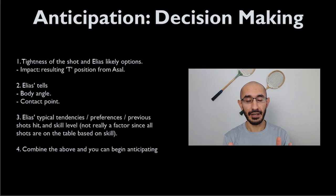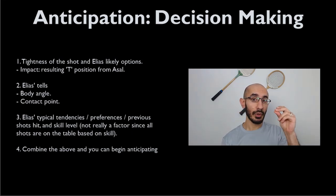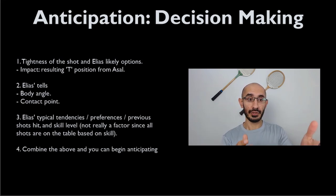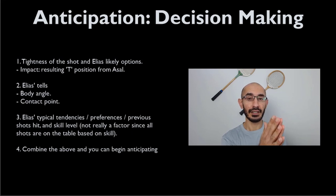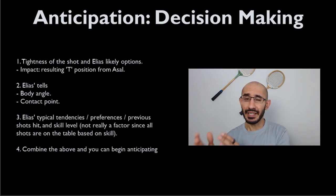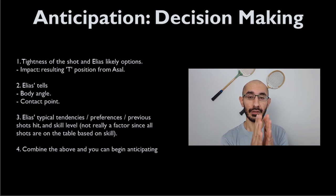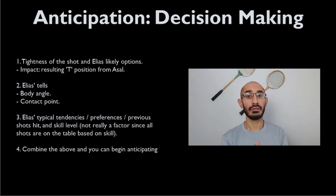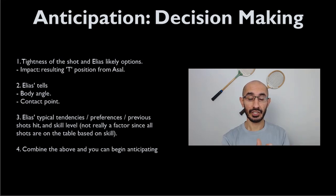In squash — and in everything really — what we're trying to do is reach the level where we have chunked these scenarios in our mind. So when you see an opponent in position X, your brain automatically picks up: the ball is this tight to the side wall, which means the cross-court is very unlikely — unless you're playing Ali Farah, who can snap that ball cross even when it's really tight to the side wall. That means you can adjust your tee position a little bit towards the side the ball is already on, because the angle is very difficult to hit. All of these things — body angle, early or late contact — give us cues as to where the next shot is about to go.